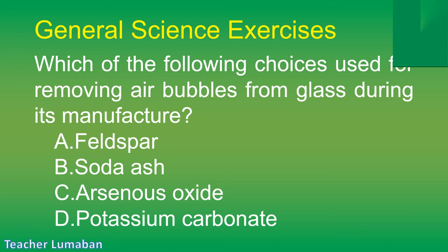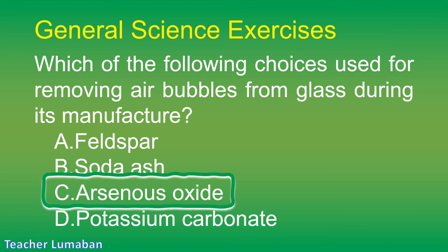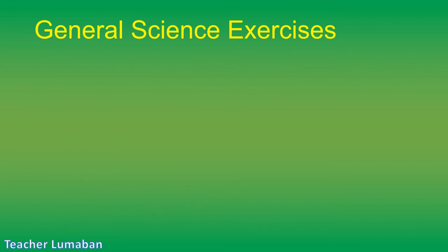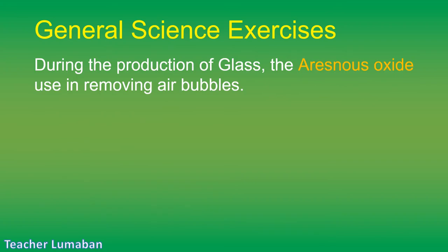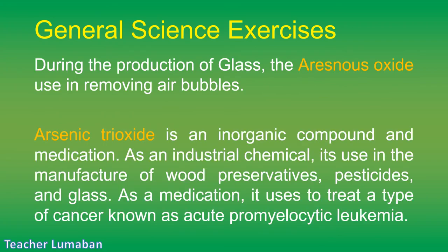The correct answer is Letter C: arsenous oxide. During the production of glass, arsenous oxide is used in removing air bubbles. Arsenic trioxide is an inorganic compound and medication. As an industrial chemical, its use includes the manufacture of wood preservatives, pesticides, and glass. As a medication, it is used to treat a type of cancer known as acute promyelocytic leukemia.